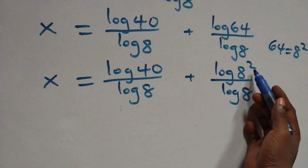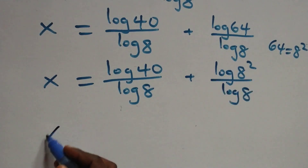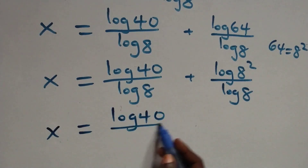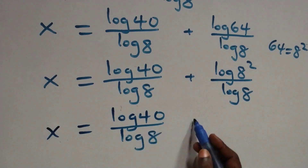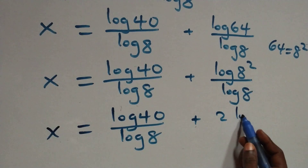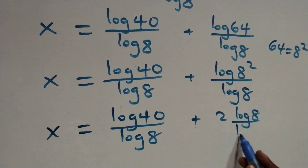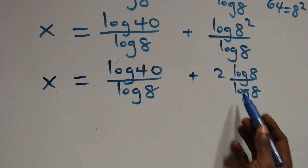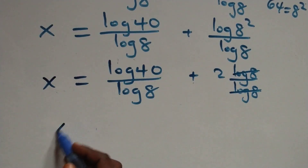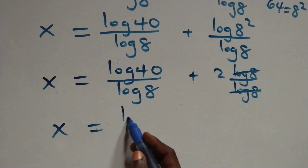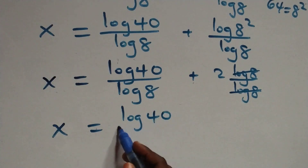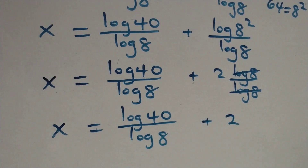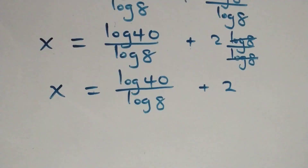We apply the power rule of logarithms again, so it becomes x equals log 40 over log 8 plus 2 log 8 over log 8. The next step: log 8 cancels each other and 2 is left, giving x equals log 40 over log 8 plus 2.